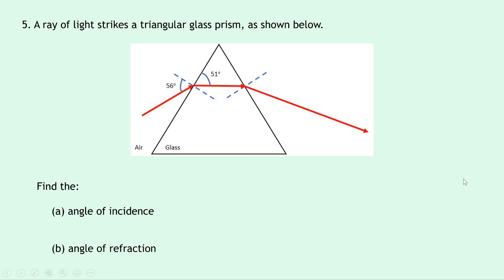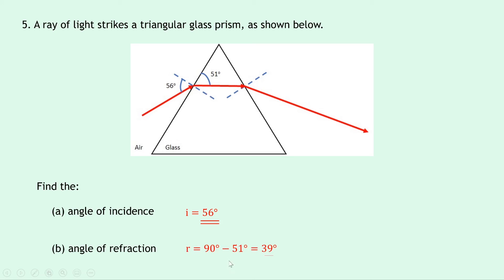Question 5 says a ray of light strikes a triangular glass prism. We have air outside and glass inside, with the ray changing direction twice. For part A, the angle of incidence is clearly shown as 56 degrees — the angle between the normal and the incident ray. For part B, the angle of refraction is the angle between the refracted ray and the normal. Again using the 90-degree relationship, we subtract from 90 to get 39 degrees.